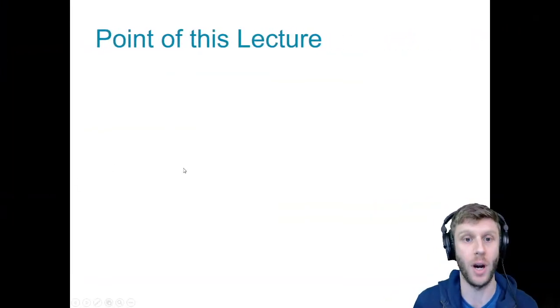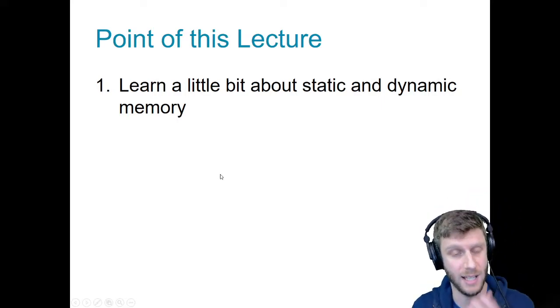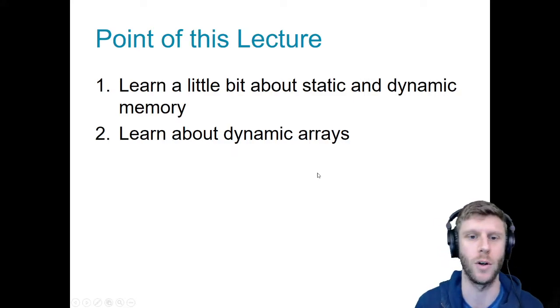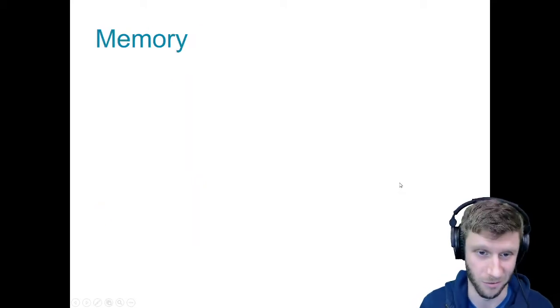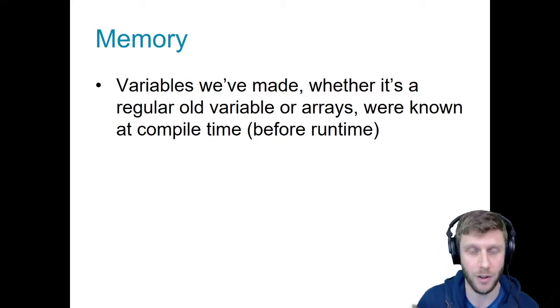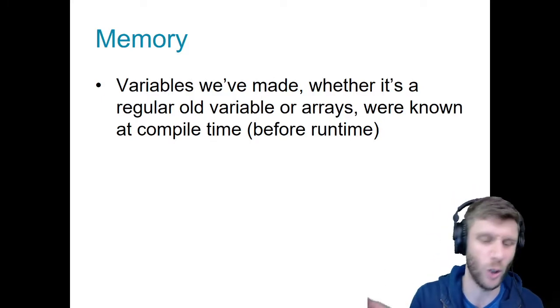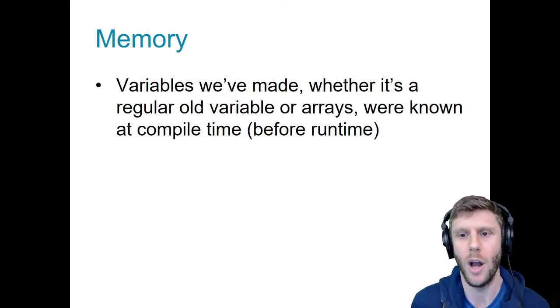The regular old arrays are too dumb — you can't ask them their size. You just have to know how long that array is. With the standard library's version of the array, it stores that information as an attribute, which is cool. But we're going to be using lists soon anyway, which are even better than the arrays. So the point of this lecture is we're going to learn about static and dynamic memory, dynamic arrays, and why they're awesome — and also how annoying they are. RAM, memory. Variables we've made, whether a regular old variable or an array, they're known at compile time.